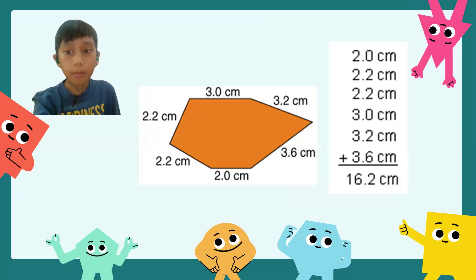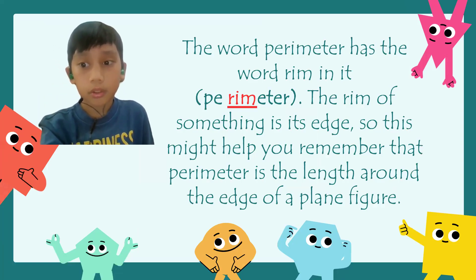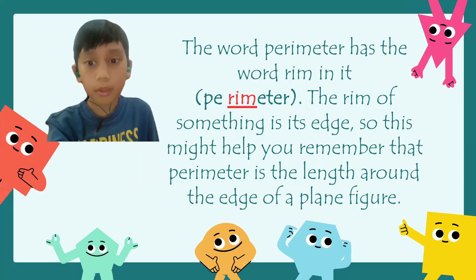The word perimeter has 'rim' in it — perimeter. The rim of something is its edge, so this might help you remember that perimeter is the length around the edge of a plane figure.